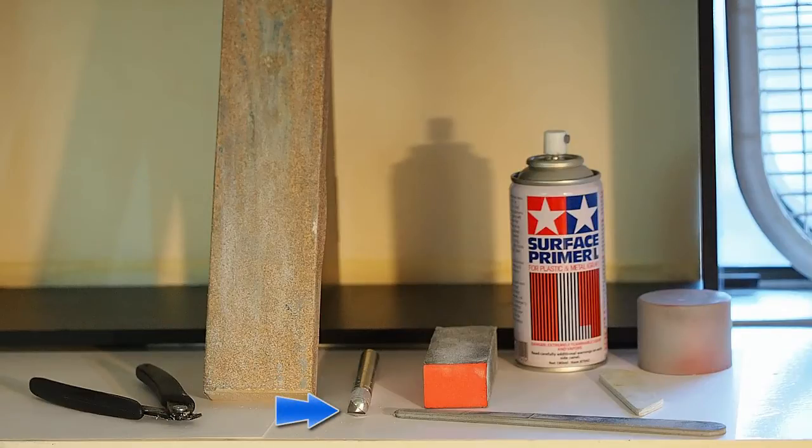I use an exacto blade for shaving off little contact points where the supports are. A foam sanding block for polishing off layer lines. I use this gray surface primer for priming the surface so I can visually see where I need to clean up.